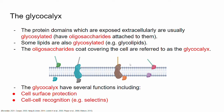The glycocalyx has several functions, but the two main functions are cell surface protection, specifically against chemicals. So if the cell is exposed to harmful chemicals, the coat made up of sugar covering the cell will protect it from damage. Another function is cell-to-cell recognition, specifically during inflammation, which involves proteins called selectins.